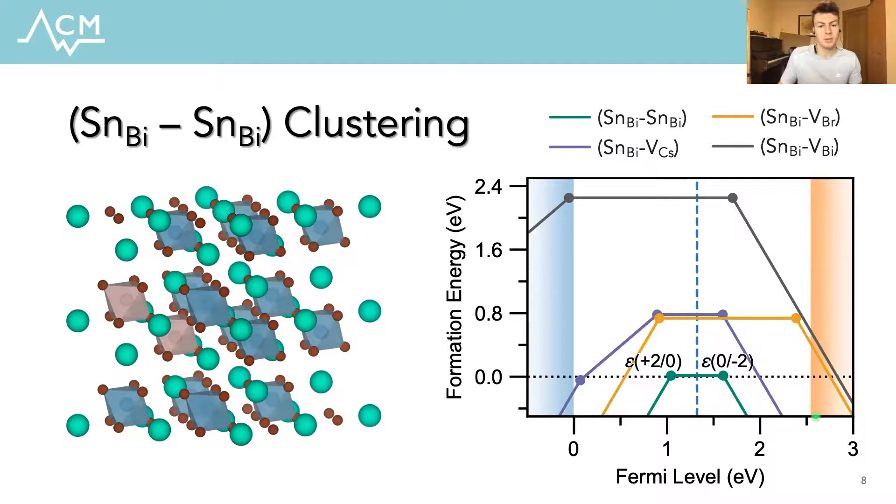Secondly, the tin bismuth double substitution is stable in the neutral charge state for a Fermi level near the mid-gap, and both of the associated charge transition levels are again negative u levels. So the balance between these two doubly charged states for this substitution complex results in a self-consistent Fermi level pinned directly at the midpoint of these two charge transitions, which occurs just above the intrinsic mid-gap value, which again was in exact agreement with the experimental results.